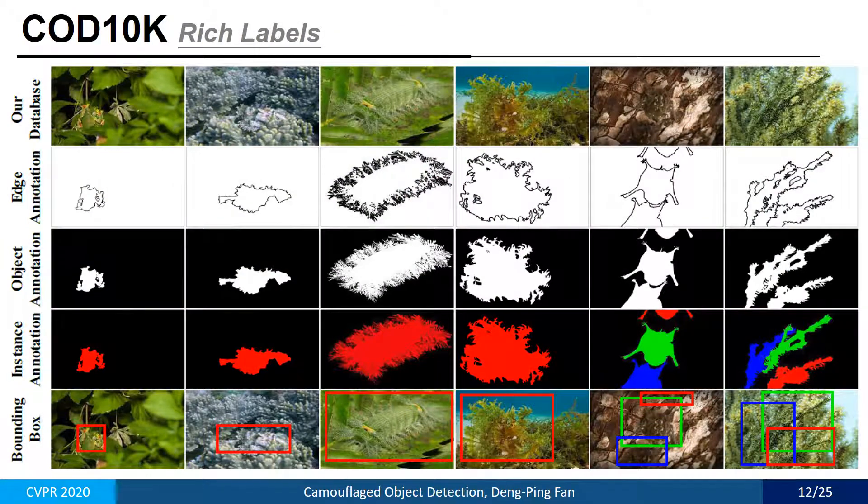Our new dataset provides rich labels including edge, object, instance, and bounding boxes annotations, facilitating many vision tasks such as localization, object proposal, and semantic edge detection.